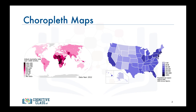Similarly, the map to the right is a choropleth map of the U.S. showing population per square mile by state. Again, the darker the color, the higher the population. According to the map, states in the eastern part of the U.S. tend to be more populous than states in the western part, with California being an exception.